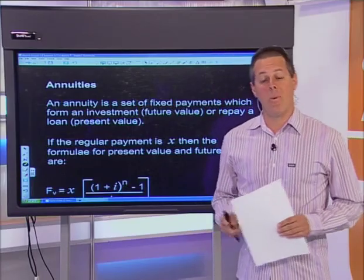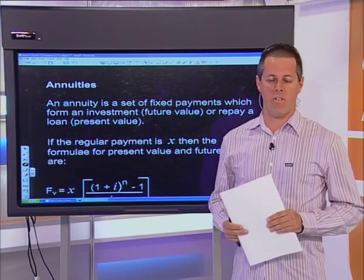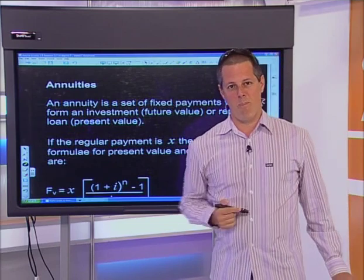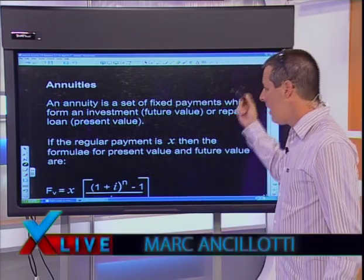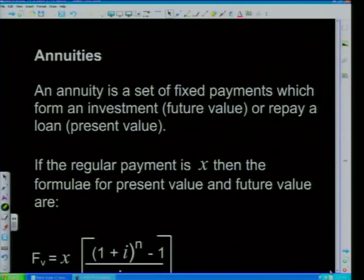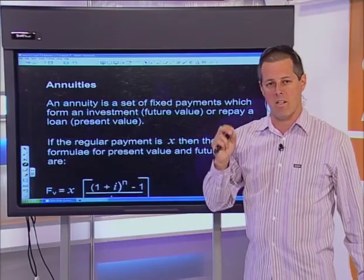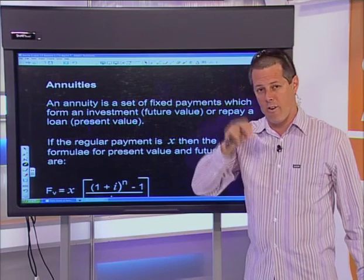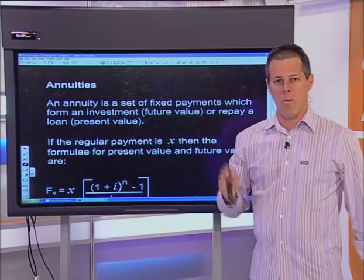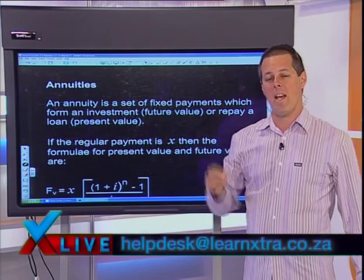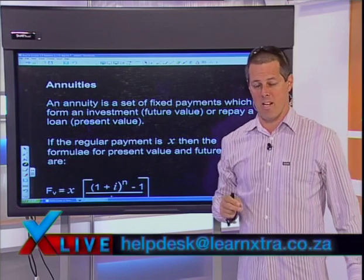Tonight we're going to be talking about annuities, which is the bulk of the Grade 12 content. An annuity is a set of fixed payments which form an investment — either a future value investment or to repay a loan, which is a present value. The key point is that annuities involve the same amount at the same frequency all the time. If you pay R100 monthly, it must be R100 every single month. If amounts vary, it's not an annuity.